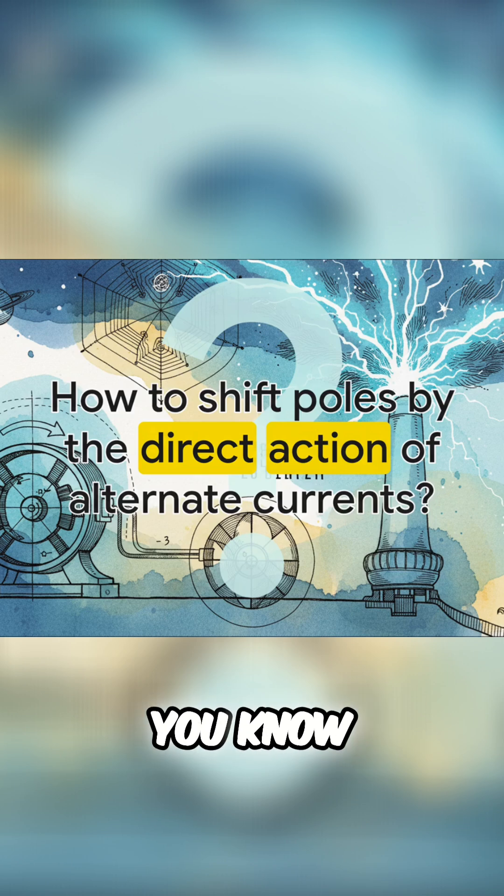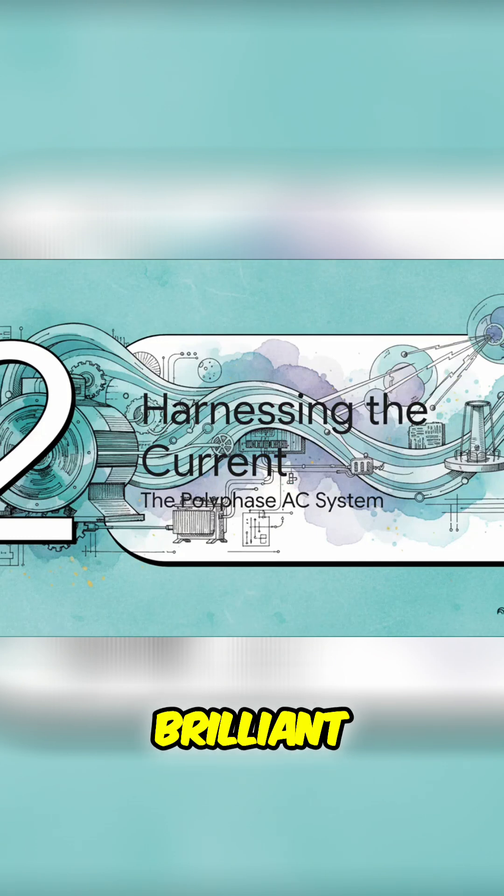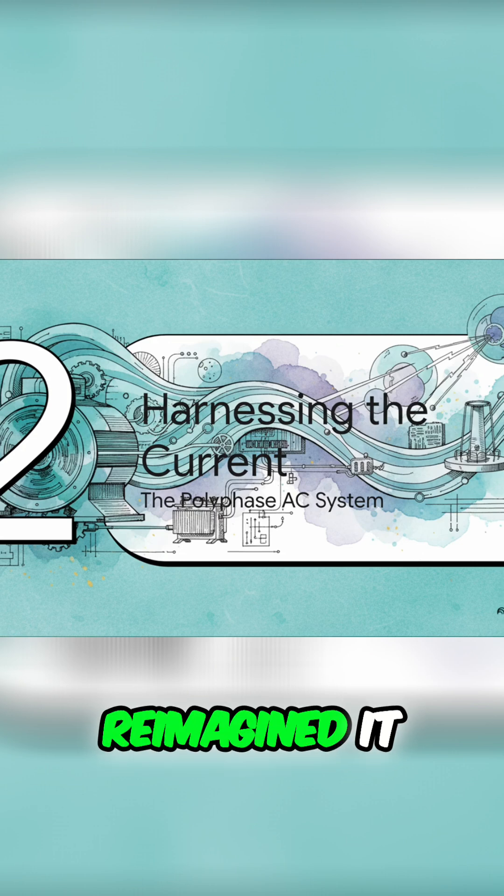The answer would literally change everything. And this brings us to his absolutely brilliant solution. He didn't just tweak the old motor. He completely reimagined it from the ground up with what he called the polyphase alternating current system.